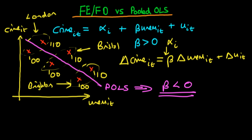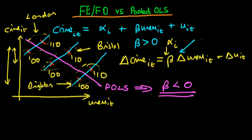Because we've removed the alpha_i term, fixed effects and first differences disregard differences in average crime levels between cities, attributing those to city-specific characteristics that don't change through time. First differences considers each pair of observations and fits a line of best fit within each pair. For London, Bristol, and Brighton, each fitted line is upward-sloping, so in each case we conclude that beta is greater than zero.